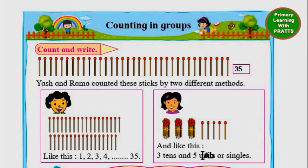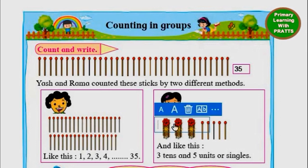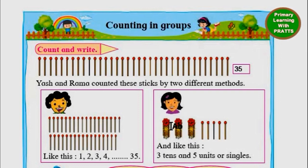So do you see how difficult it is when we are counting 1, 2, 3, 4, 5 — and how much easier it is if we simply count: 1 tenth, 2 tenths, 3 tenths — that's 30 — and then 1, 2, 3, 4, 5 — that gives us 35.